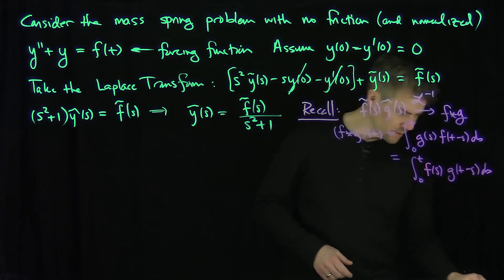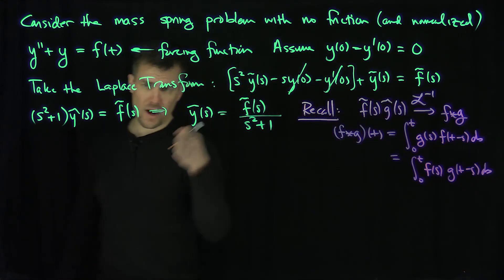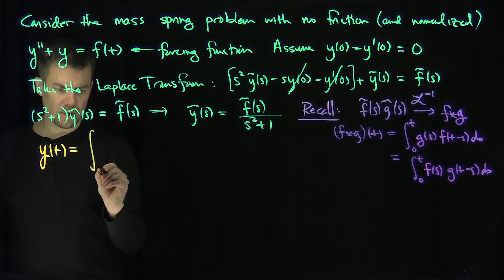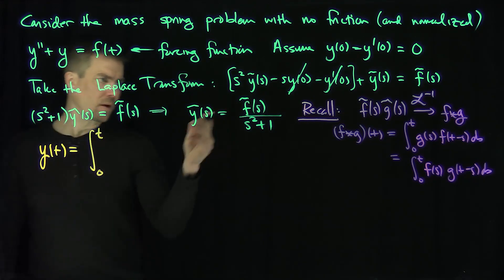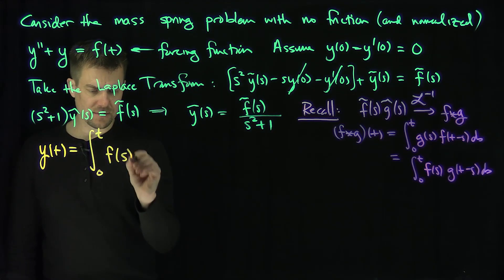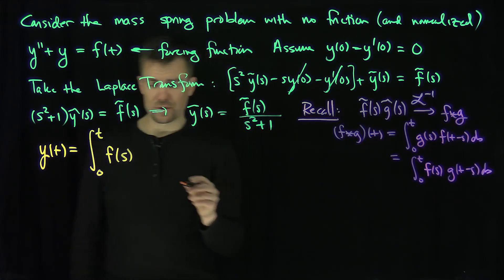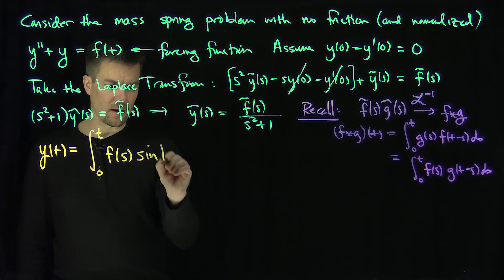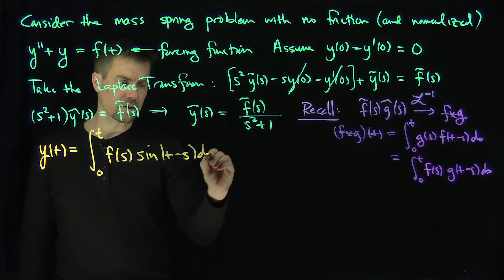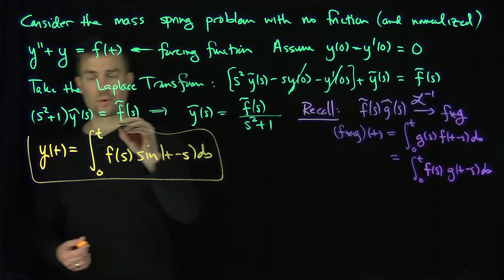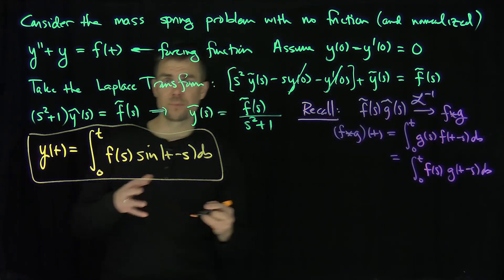So I'm using the convolutional result, and so what we can do now is I can solve this problem. So y of t, the solution, is going to be the integral from 0 to t of my f of s, and then the inverse Laplace transform of 1 over s squared plus 1 is just sine. So it's going to be sine of t minus s, ds. And so this is the solution, this is exactly the structure that the Green's function has, right?